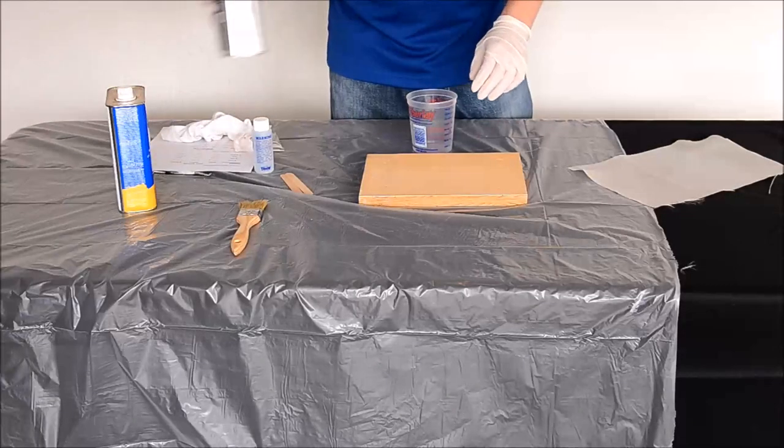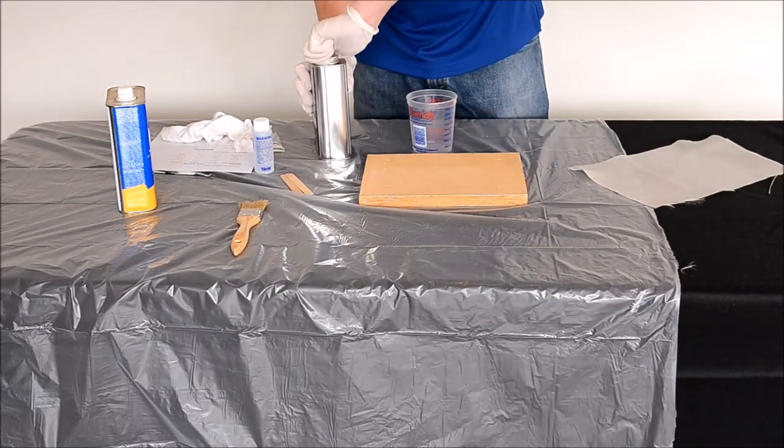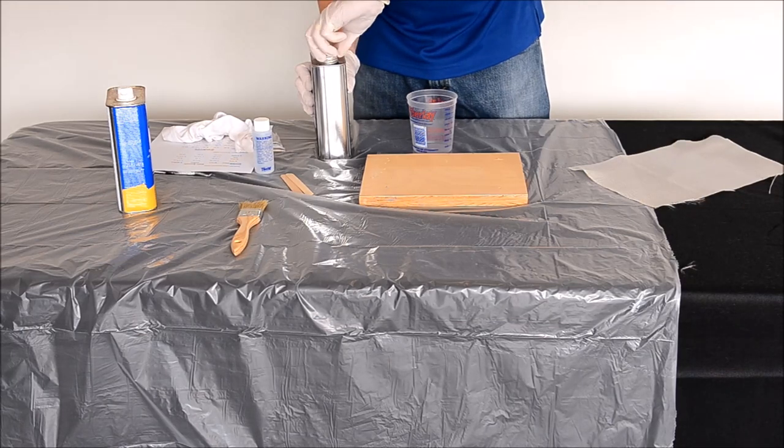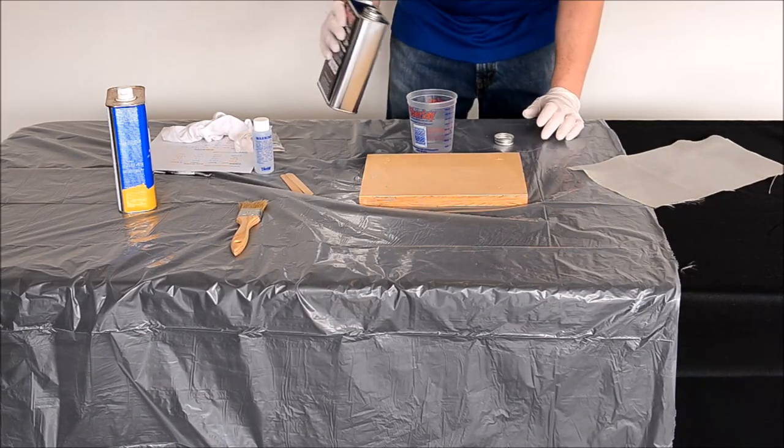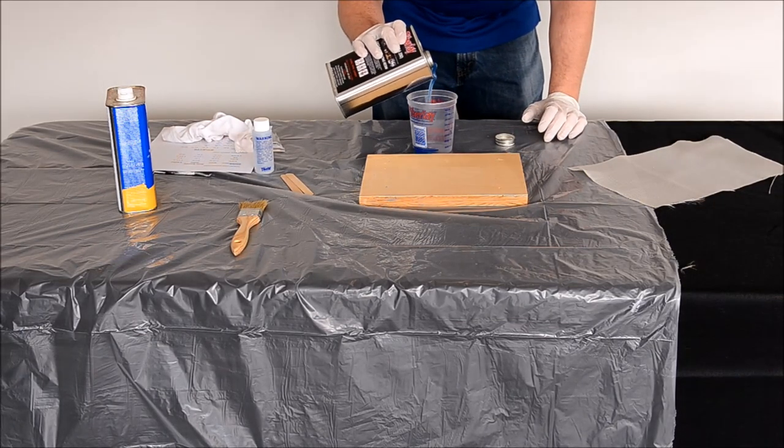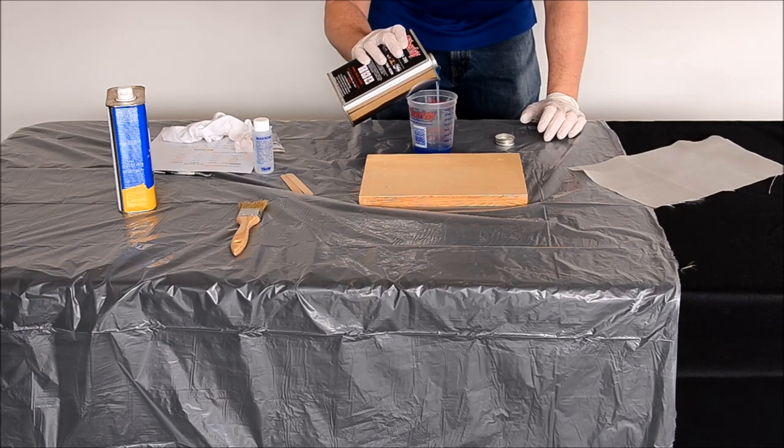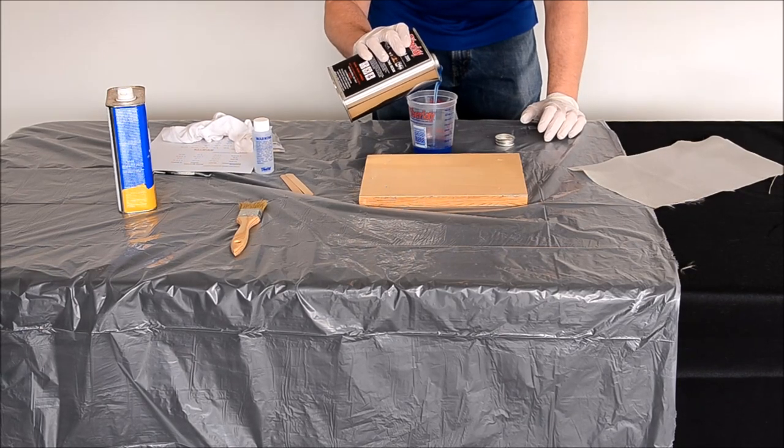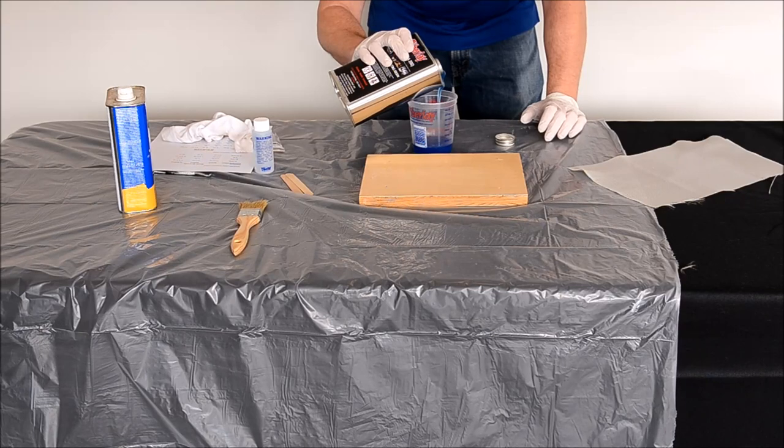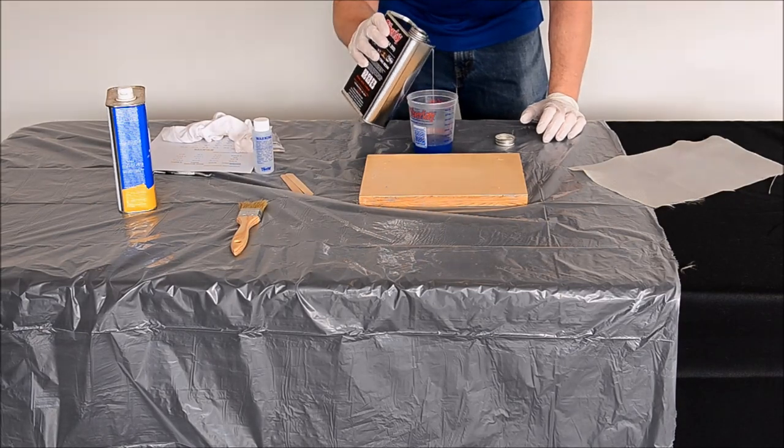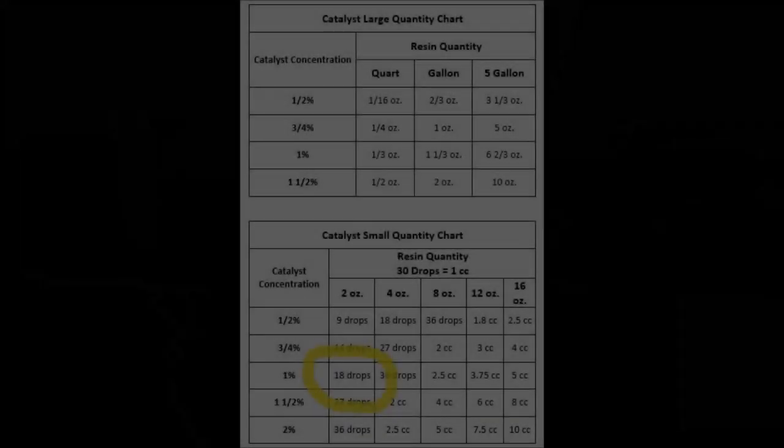We will be using Orca 200 laminating resin to laminate the fiberglass to the plywood. The Orca 200 is a general purpose marine grade laminating resin. I am going to measure out two ounces of the resin.